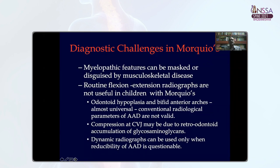There are certain diagnostic challenges in children with Morquio Disease. Like other children with skeletal dysplasia, myelopathic features can be masked or disguised by the associated musculoskeletal disease, rendering the diagnosis difficult. One hallmark of Morquio Disease is that the most common cause of cervical myelopathy is atlantoaxial dislocation. Routine dynamic X-rays used for diagnosis of atlantoaxial dislocation are not useful in Morquio because of the severe odontoid hypoplasia and bifid anterior arch, almost universally present. The radiological parameter — the atlantodental interval — cannot be used in Morquio Disease.